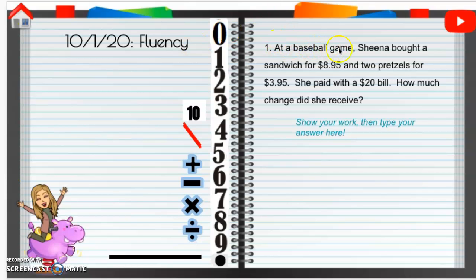So number one, at a baseball game, Sheena bought a sandwich for $8.95 and two pretzels for $3.95. She paid with a $20 bill. How much change did she receive?